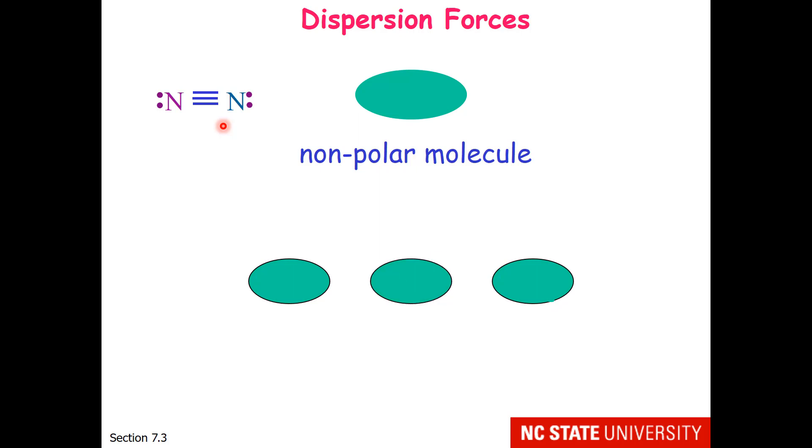Even though nitrogen is nonpolar and the formal charges on each nitrogen are zero, the electrons travel about in their orbital patterns. So at any particular time it may be that there is more electron density on the right side of the molecule versus the left side of the molecule. This creates a partial negative on the right side and a partial positive on the left side.